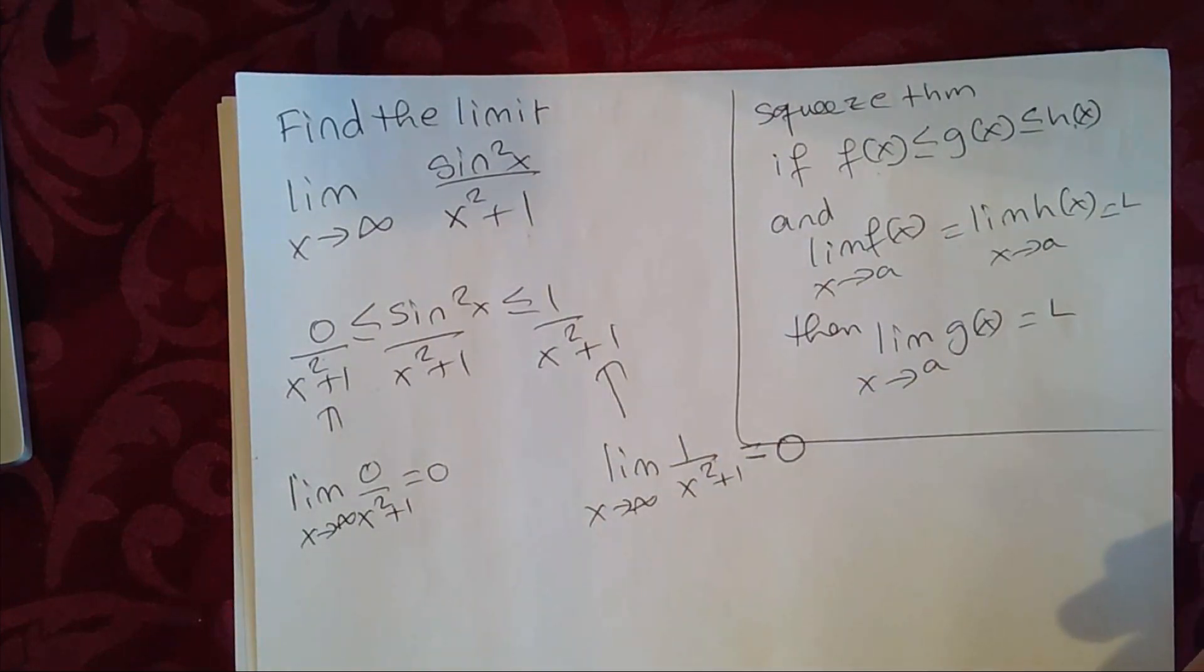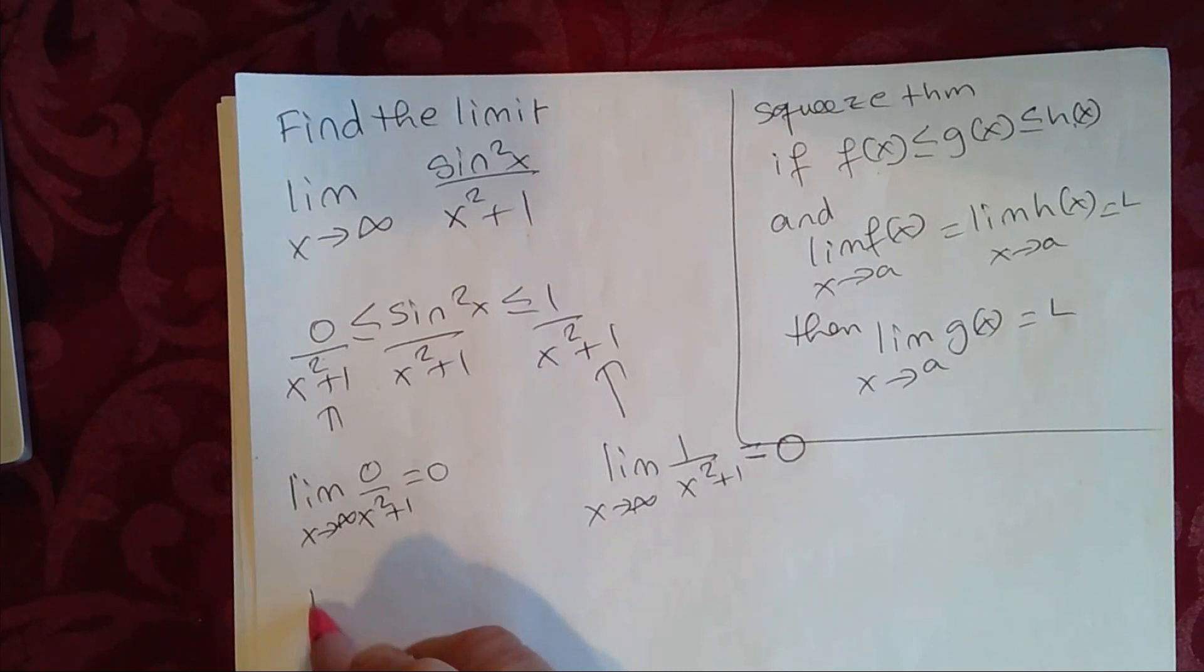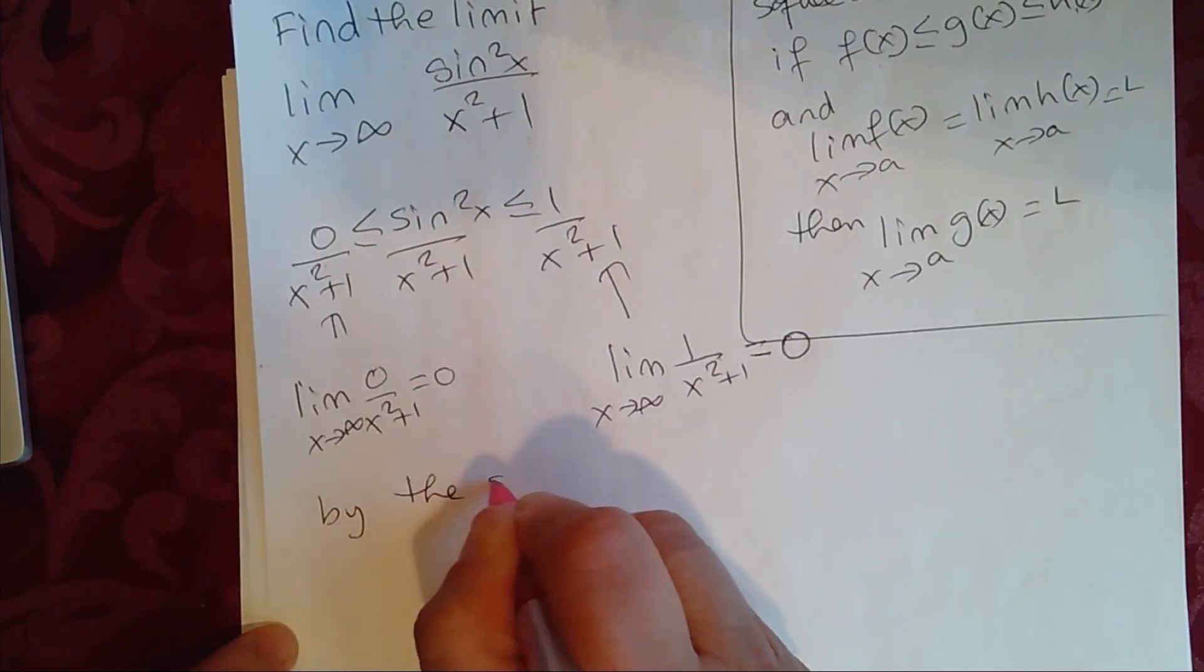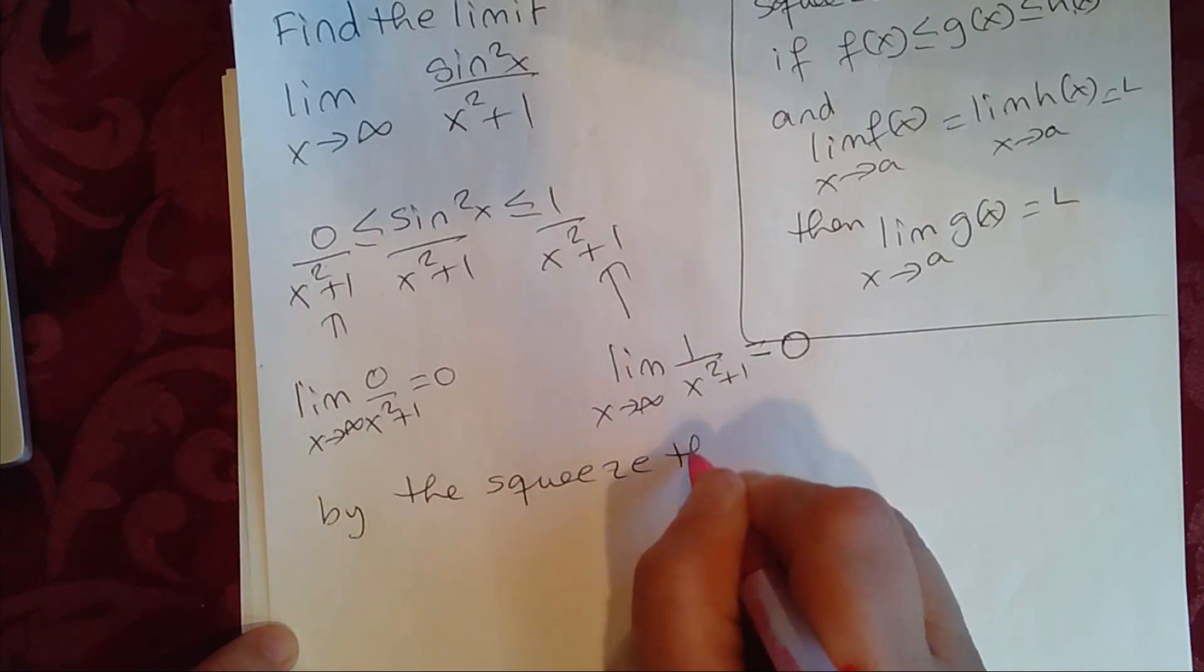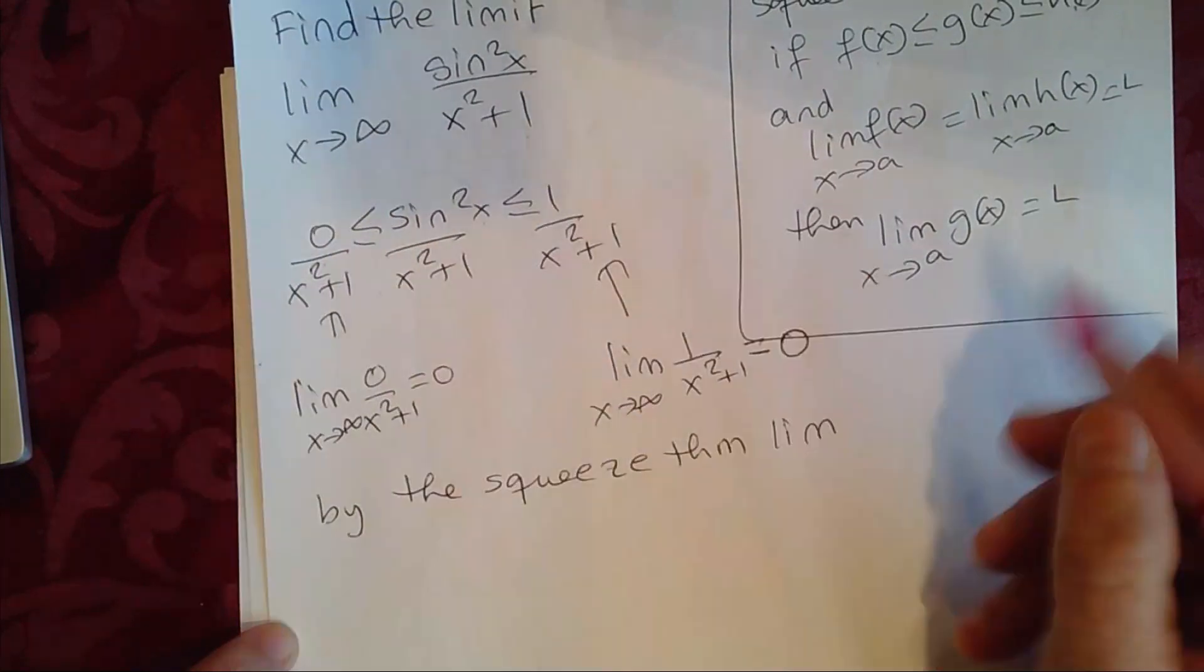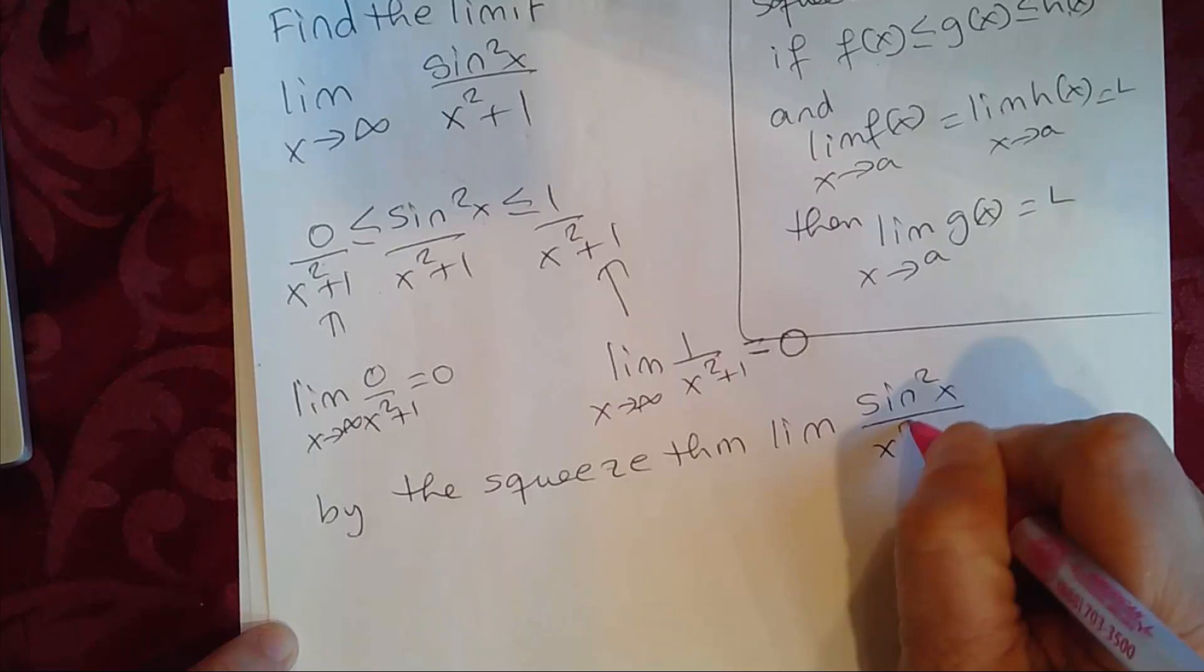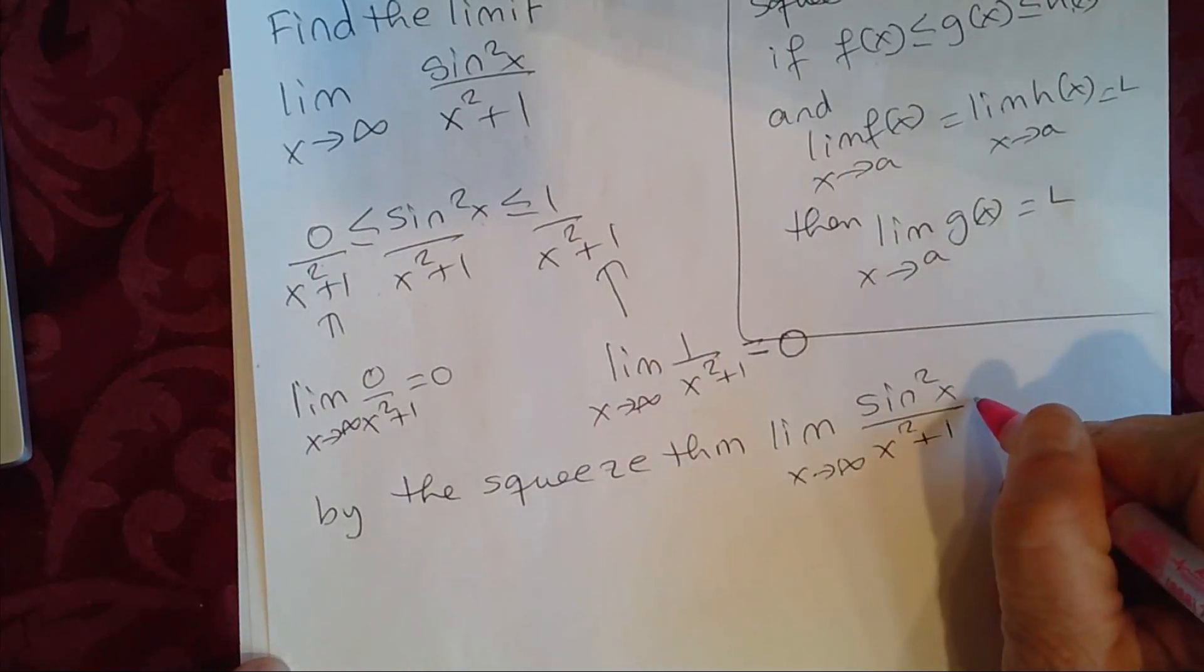So the limit of this and the limit of this are equal as x approaches infinity. So by the squeeze theorem, the limit of the one in the middle here, sine squared x over x squared plus 1, as x approaches infinity, is also equal to 0.